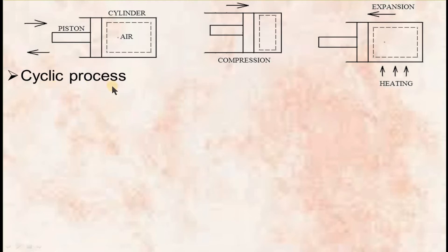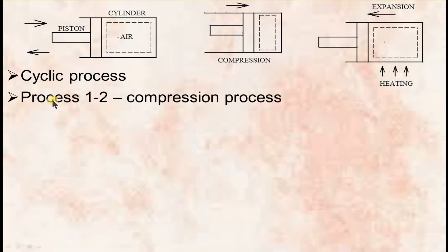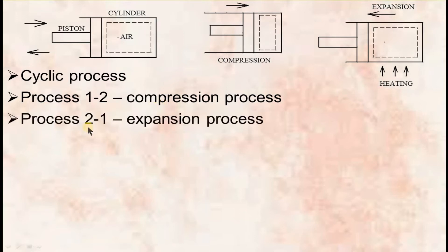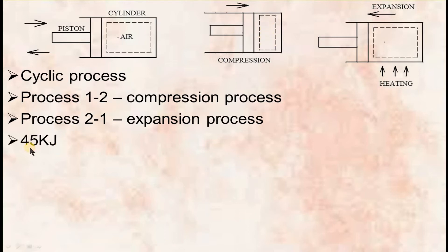We will consider the compression process as process 1 to 2 and the expansion process as process 2 to 1. During process 1 to 2, the piston is moved towards right and the air gets compressed, due to which the heat present in the air will be rejected to the surroundings. The amount of heat rejected to the surroundings is 45 kJ, and the amount of work done by the piston for compressing the air is 82,000 Nm.